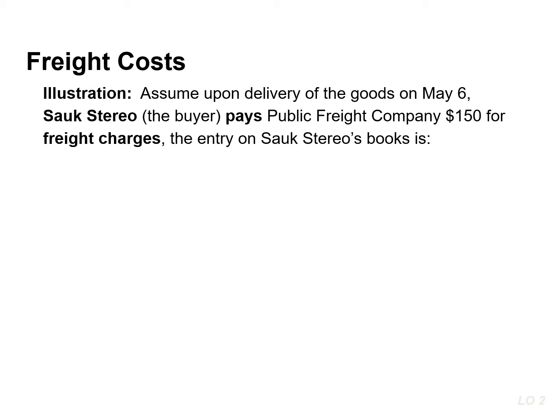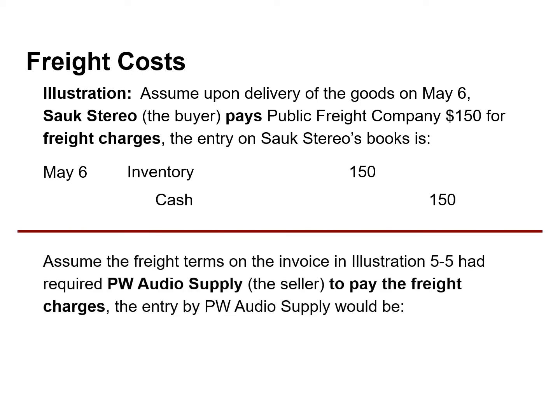As a result, the account inventory is increased or debited for the freight costs. For example, if Salk Stereo pays a public freight company $150 for freight charges on May 6, the entry would be a debit to inventory for $150 and a credit to cash for the same amount. In contrast, freight costs incurred by the seller are an operating expense to the seller.